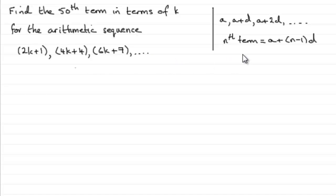Now in order to find the 50th term, we know that the nth term is always given by a plus n minus 1 times d. But the problem is we don't know what d is. We know what the first term is, we know that n is going to be 50, but that common difference, what is it going to be?